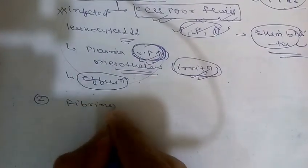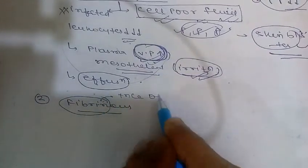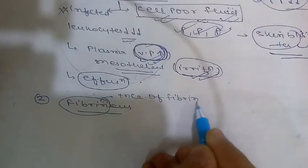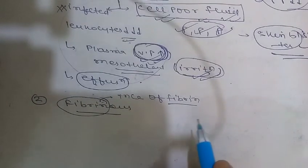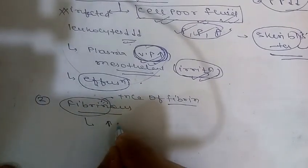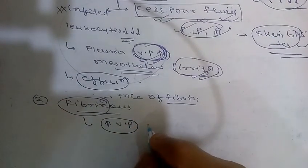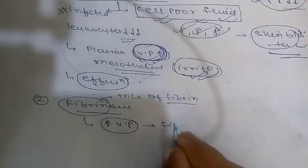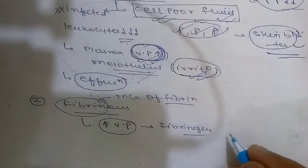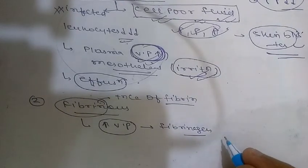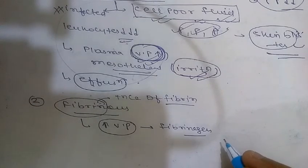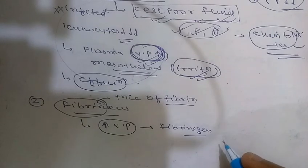The next type is fibrinous inflammation. The name itself indicates the presence of fibrin. If there is a greater increase in vascular permeability, large molecules such as fibrinogen pass out of the blood and enter the cavities, where fibrinogen is converted into fibrin and deposited into the extracellular space.